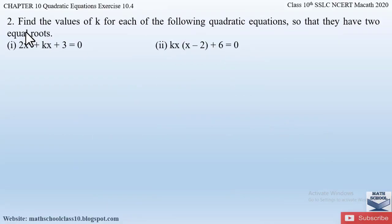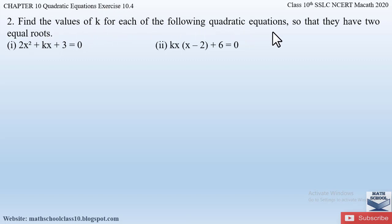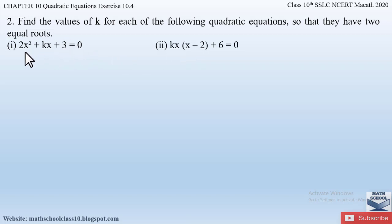Question number two from exercise 10.4, chapter 10, quadratic equations says: find the values of k for each of the following quadratic equations so that they have two equal roots. There are two parts to this question, and for each equation we have to find out the k value such that they have two equal roots.